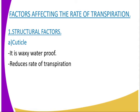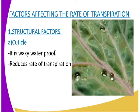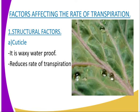Plants growing in wet habitats have a problem of containing too much water in their tissue, such that these plants have no cuticle or only a thin layer of cuticle on their leaves. The thin cuticle allows high rates of transpiration as a means of getting rid of excess water. As seen in our diagram, the cuticle appears shiny, and it prevents excessive water loss especially in plants growing in arid areas because they need to retain water.